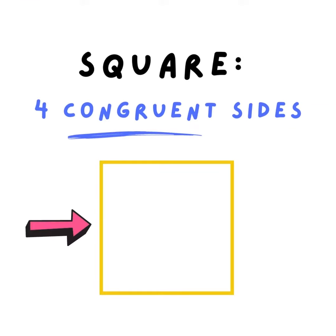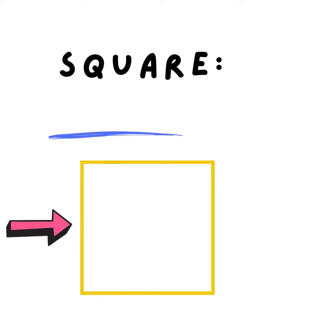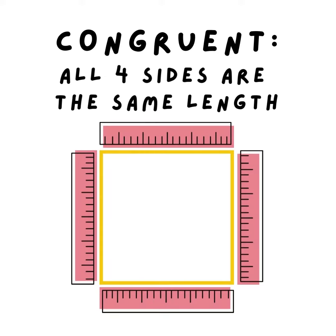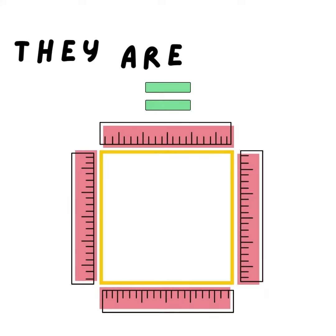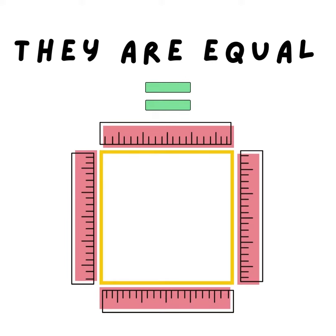A square is a shape with four congruent sides. Congruent means all four sides are the same length — they are equal.